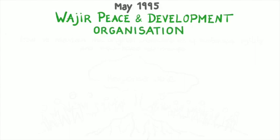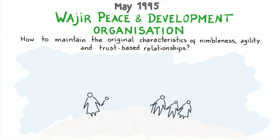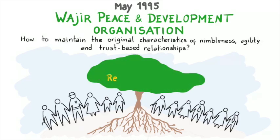So in May 1995, the Wajir Peace and Development Organization was formed in an effort to legitimize the peace effort and weave together all stakeholders for keeping the peace. The challenge for this organization was how to maintain the original characteristics of nimbleness, agility, and trust-based relationships and reconcile that with a Kenyan and Somali legal requirement for an NGO. Working now with members of parliament, local government officials, NGO, and other stakeholders, the organization was setting the roots for becoming a new civil institution that is responsible for maintaining the peace in the district.